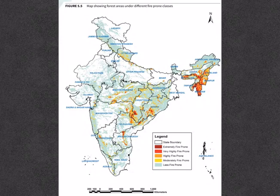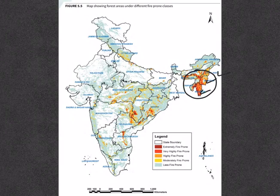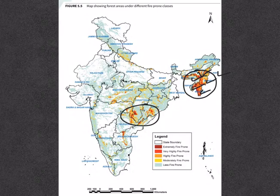The forest report has prepared a map showing forest areas under different fire-prone classes. Extremely fire-prone areas are found mainly in the southern region of northeastern states — Mizoram, Manipur, Nagaland, Meghalaya, Tripura, and some parts of Assam. Central India also has some extremely fire-prone areas, mainly in Chhattisgarh, Telangana, Maharashtra, and Odisha. A few parts in Andhra Pradesh and Karnataka also come under this category.